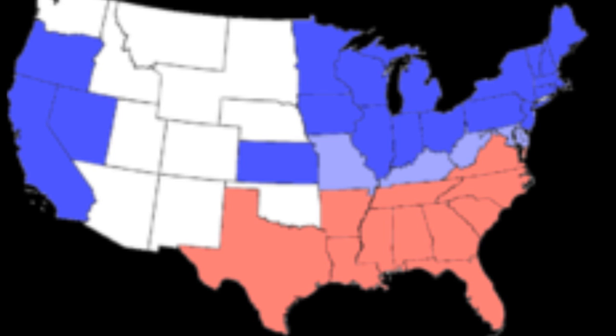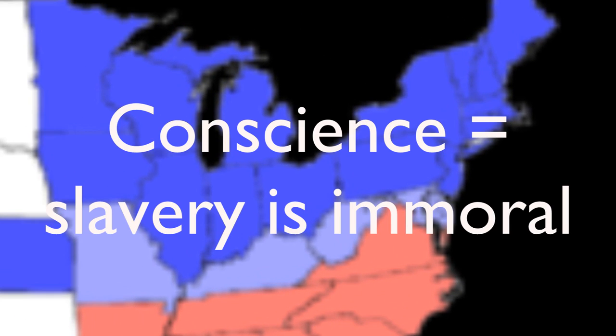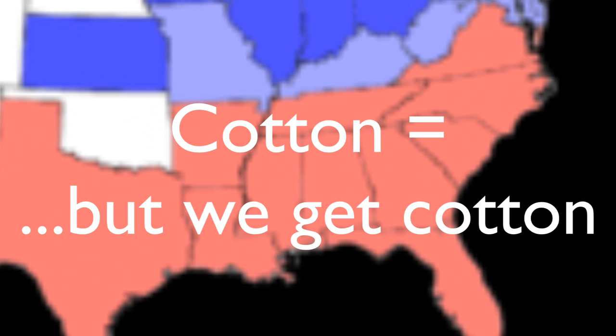The issue of slavery split the party in two: the Conscience Whigs and the Cotton Whigs, who, after the split, joined the Republican and Democratic parties respectively. Conscience Whigs in the North favored the abolition of slavery and halting the institution's spread into new territories. The Cotton Whigs in the South took the opposite viewpoint.